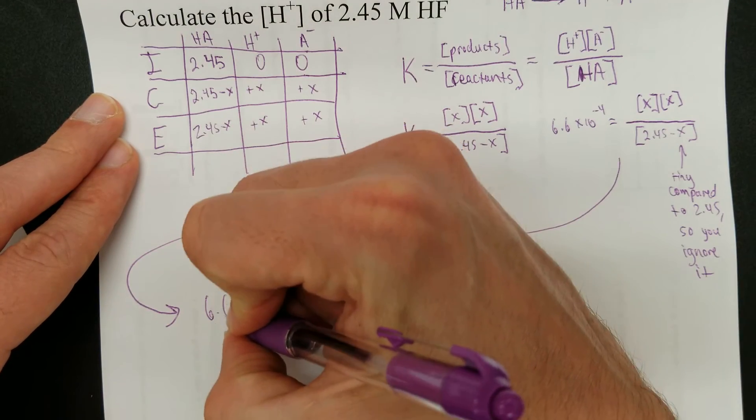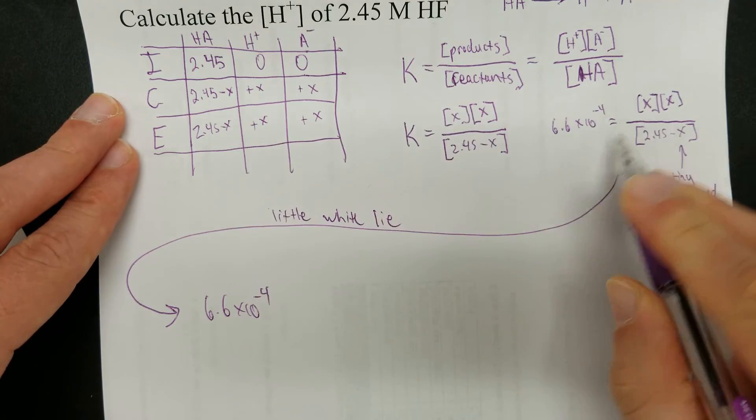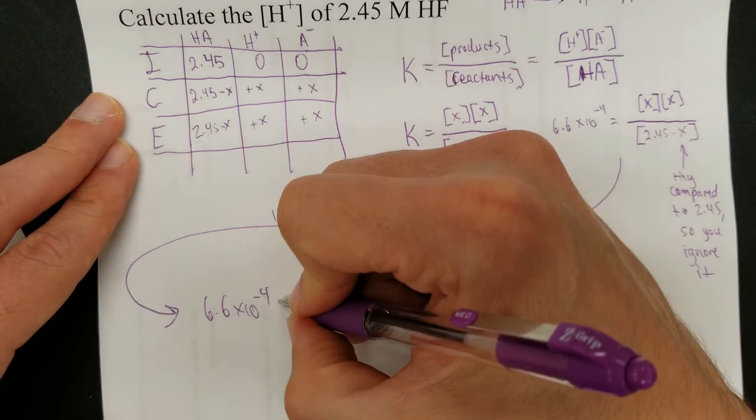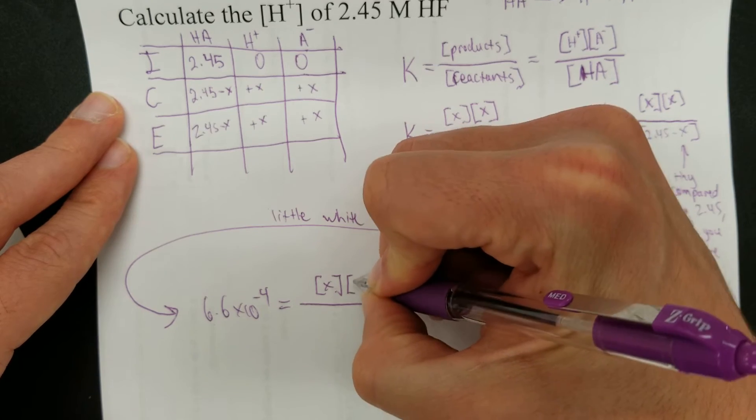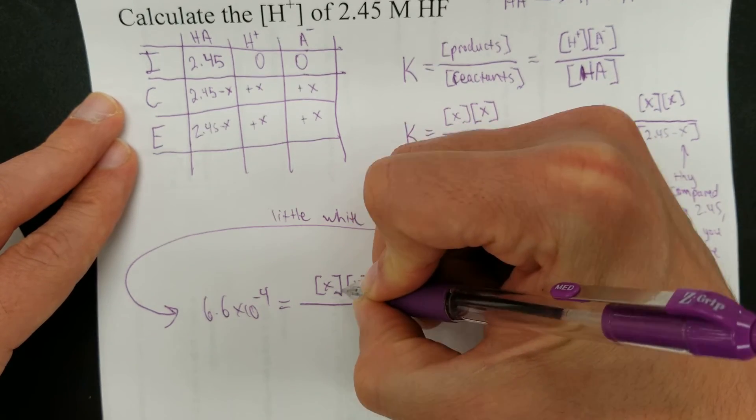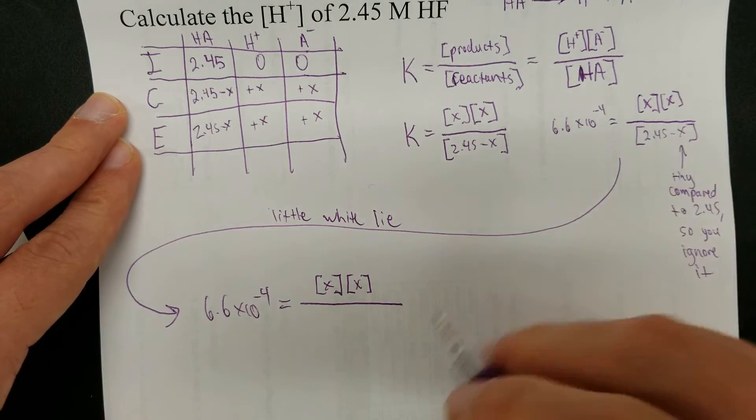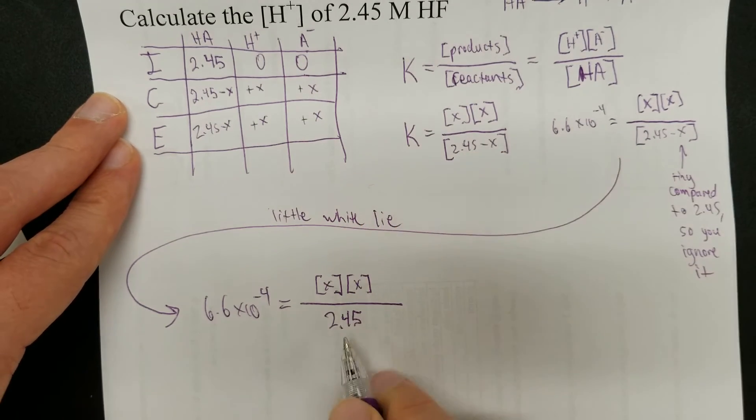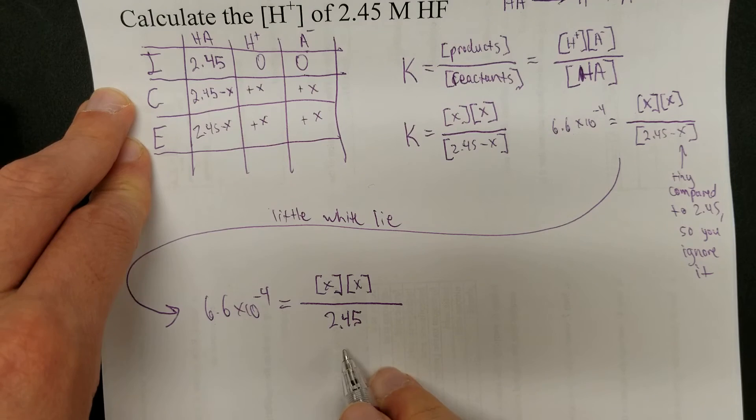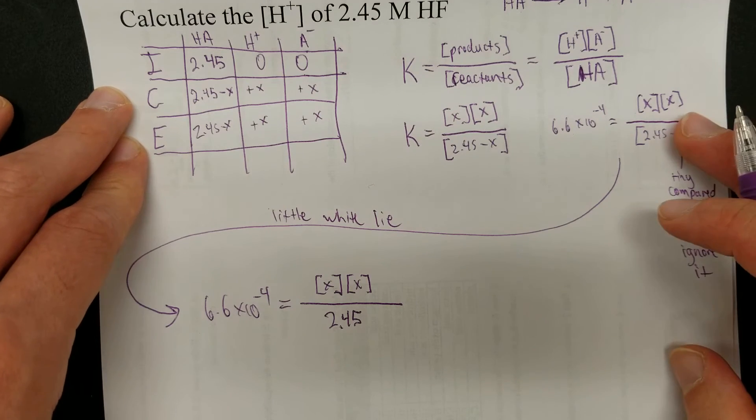So, I'm just going to say 6.6 times 10 to the negative fourth is equal to concentration of X times concentration of X again. And then on the bottom, I'm just going to call it 2.45. That's my little white lie right there. This is a lie, but it's close enough that, fine, it'll give us an answer that doesn't really change the results.